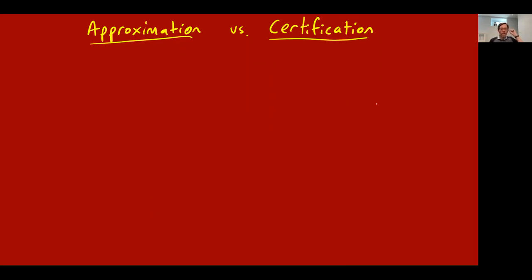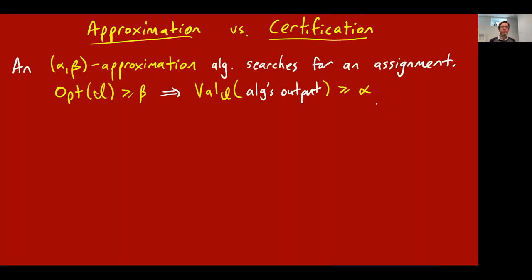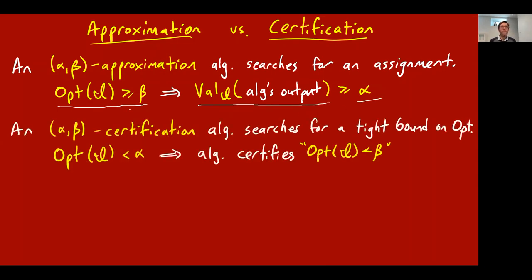What is the difference between approximation and certification? An alpha-beta approximation algorithm is a search problem: when the instance has optimum value at least beta, the algorithm gives back a solution of value at least alpha. An alpha-beta certification algorithm searches for a tight upper bound on opt: when the optimum is strictly less than alpha, it certifies that the optimum is less than beta.